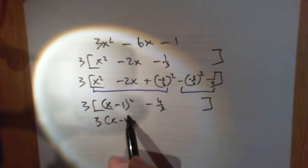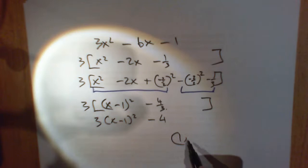Put the 3 in: 3 times that is minus 4. So in this case our minimum point is going to be, change that to a 1, leave that as it is.